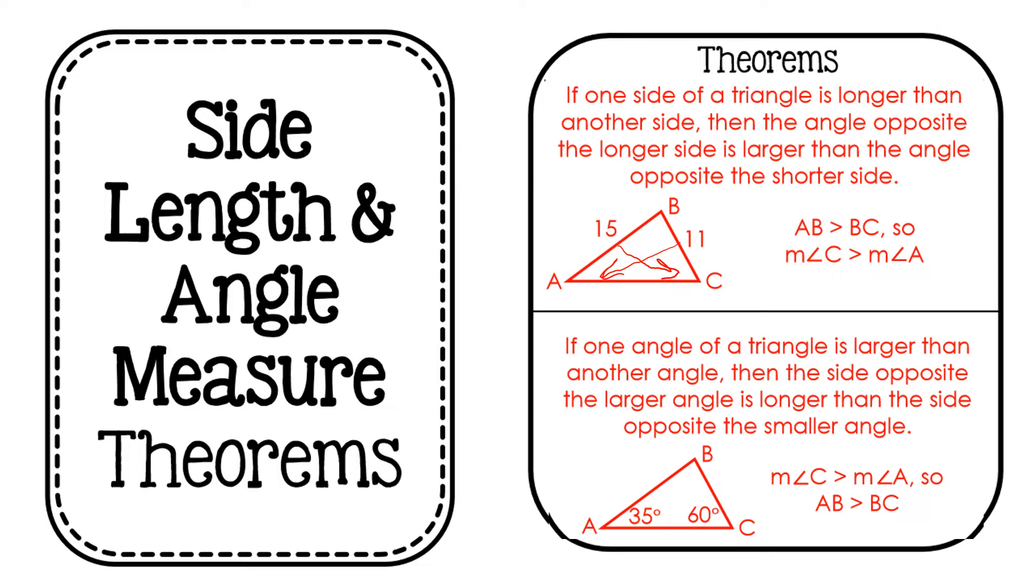AB, which is 15, is greater than BC. So therefore their angles that are opposite of them are also greater than one another.